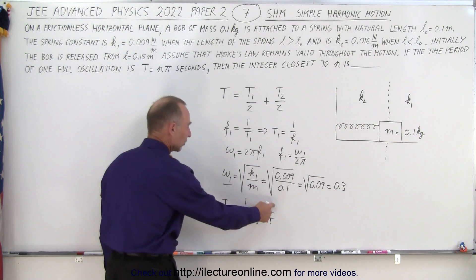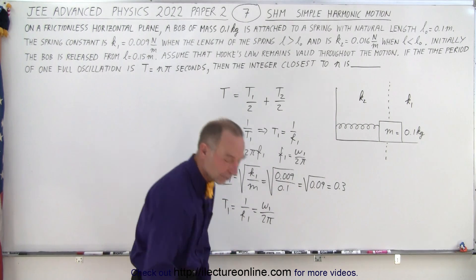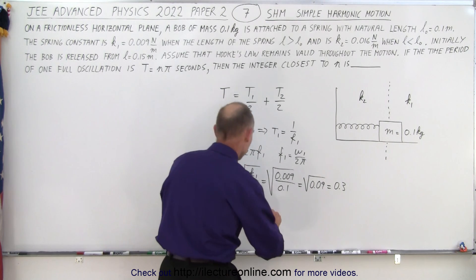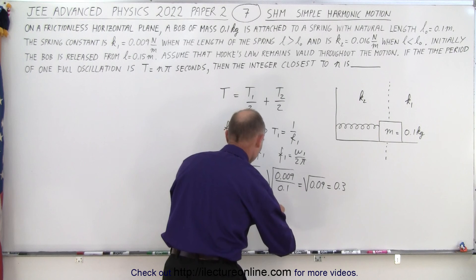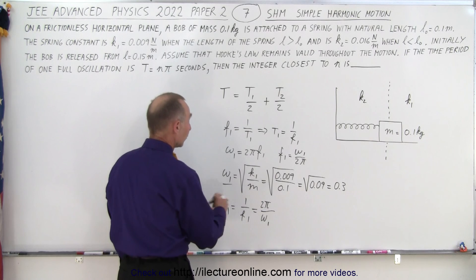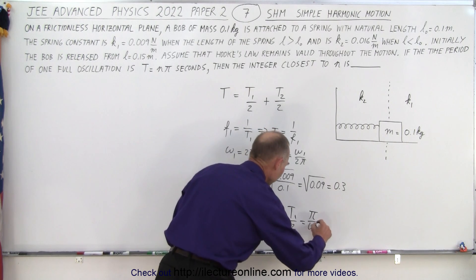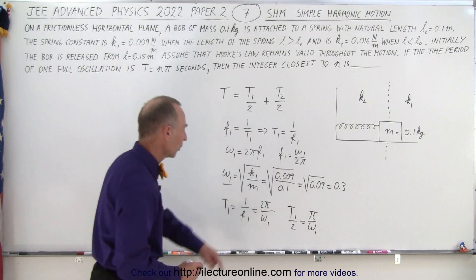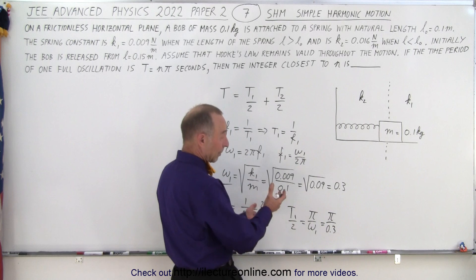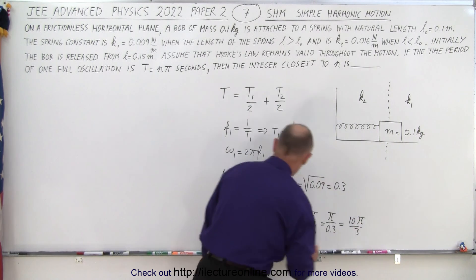That makes more sense because omega 1 is bigger than f1 but it's on the denominator. So f1 is going to be omega 1 divided by 2 pi. So that's t1 divided by 2, that's equal to pi over omega 1. And of course omega 1 is 0.3 so this is equal to pi over 0.3 and multiplying both the top and the bottom by 10 to get rid of the decimal that's equal to 10 pi divided by 3. So that's t1.